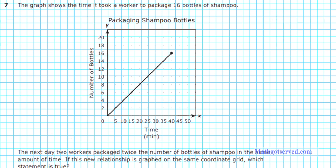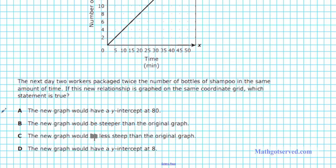Let's take a look at question number 7. It says the graph shows the time it took a worker to package 16 bottles of shampoo. So we have time versus the number of shampoo bottles packaged. The next day, two workers package twice the number of bottles of shampoo in the same amount of time. If this new relationship is graphed on the same coordinate grid, which statement is true?